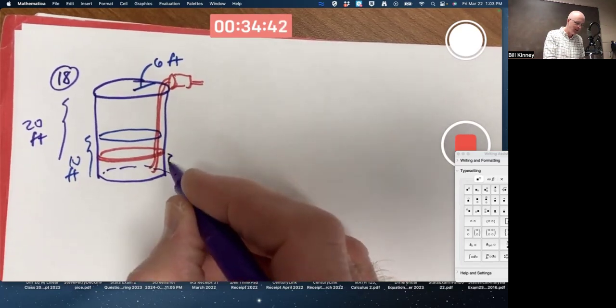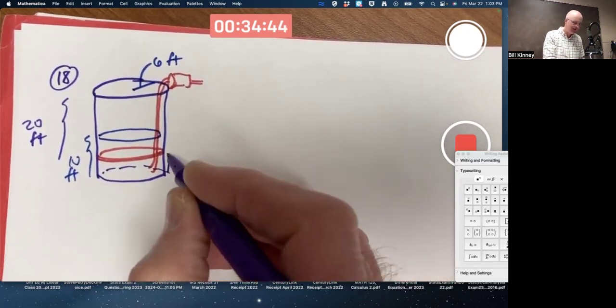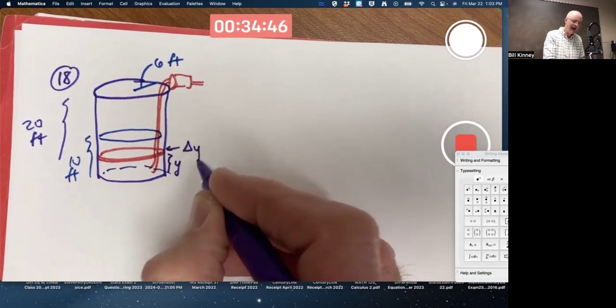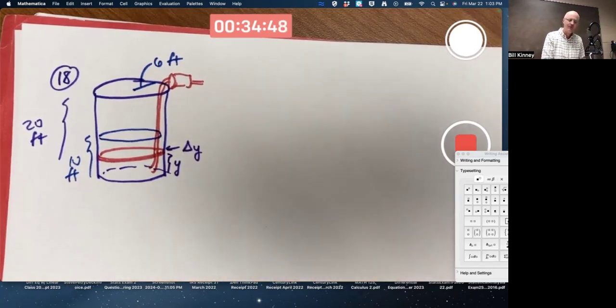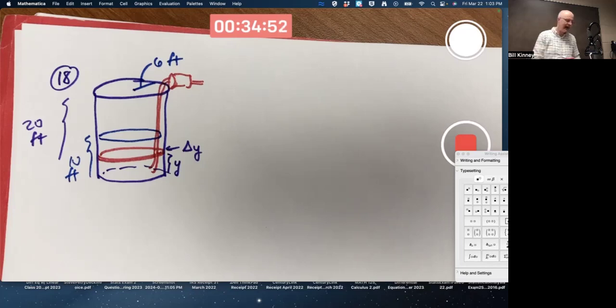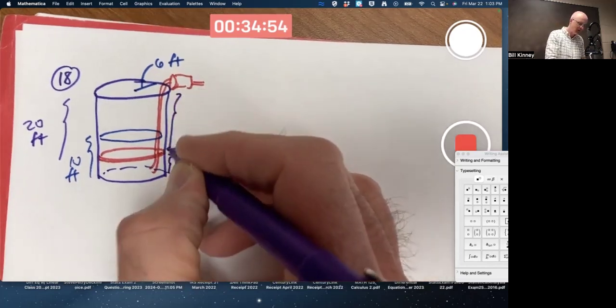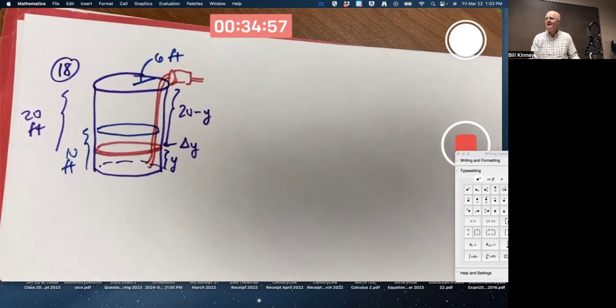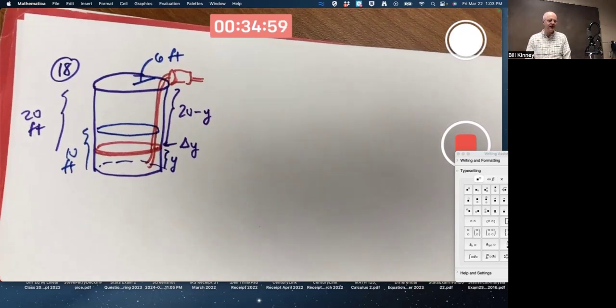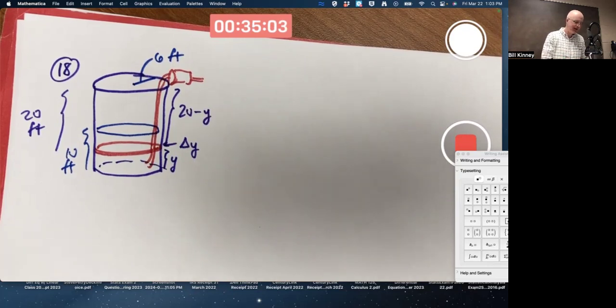What's the height of that? You could call it y. What's the thin width? How about delta y? How far does the thin slice have to go up to the top of the tank? Looks like it's 20 minus y. Are you starting to feel like you would know what to do here? Maybe. You've got to keep working at it, though.